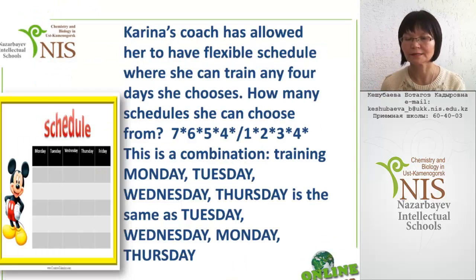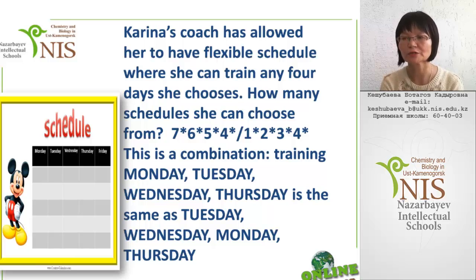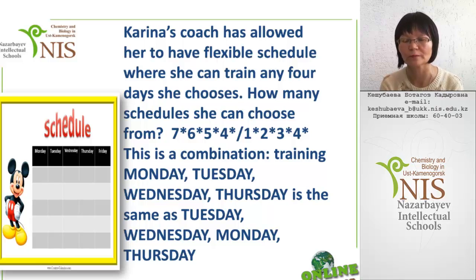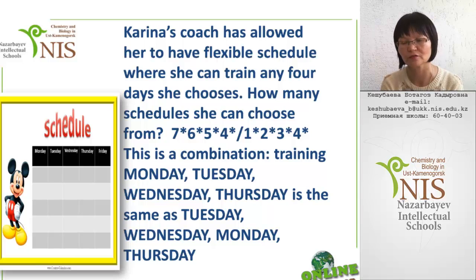Next example: Karina's coach has allowed her to have a flexible schedule where she can train any four days she chooses. How many schedules can she choose from? 7, 6, 5, 4 divided by 1, 2, 3, 4. This is a combination. Training Monday, Tuesday, Wednesday, Thursday is the same as Tuesday, Wednesday, Monday, or Thursday.